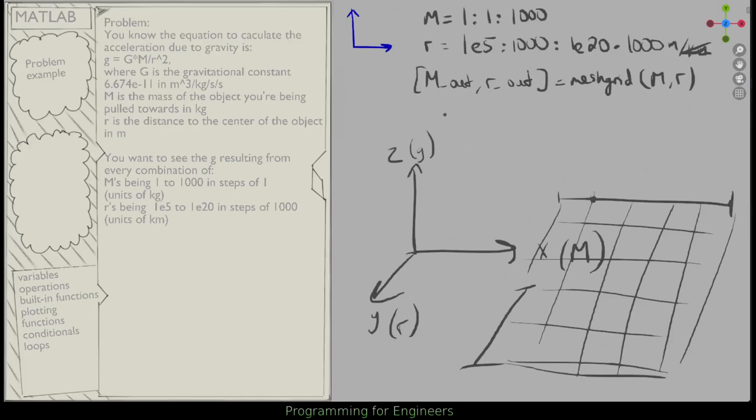And then I can do g equals capital G, and I'll define that up here. That's just what it specifies here. G dot times m dot, divided by, and then r dot squared.